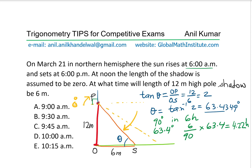So that's 4.22 hours. We convert 0.22 to minutes by multiplying by 60, which gives approximately 13 to 14 minutes. So we have more than 4 hours, which means more than 10 a.m. — that is definitely option E. The answer is 4 hours and around 14 minutes.